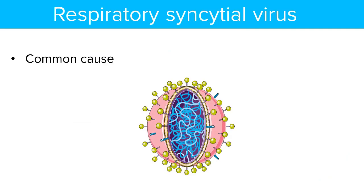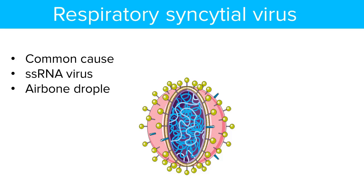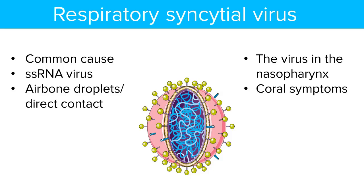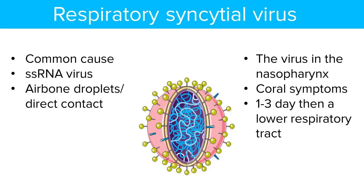Respiratory syncytial virus is the most common cause of bronchiolitis, as mentioned before. It is a single-stranded RNA virus spread via airborne droplets and direct contact. Upon infection, the virus enters the nasopharynx and in about 1 to 3 days causes upper respiratory symptoms, before migrating to the lower respiratory tract.